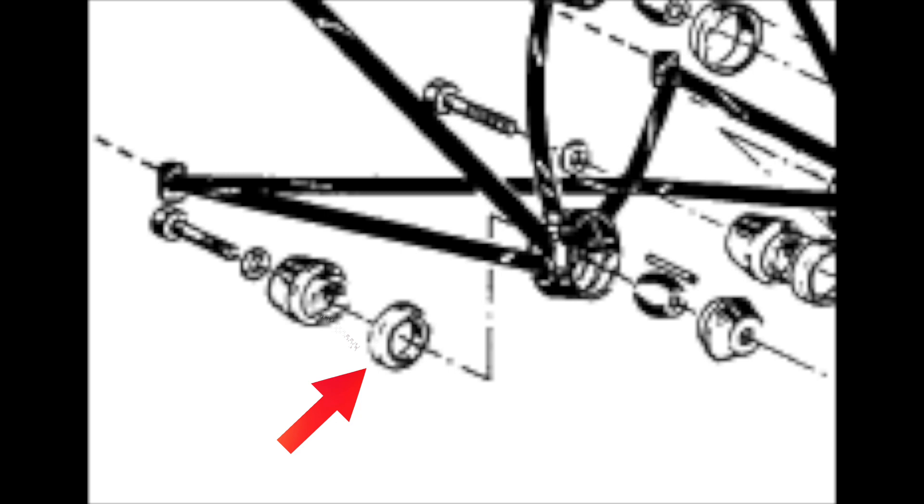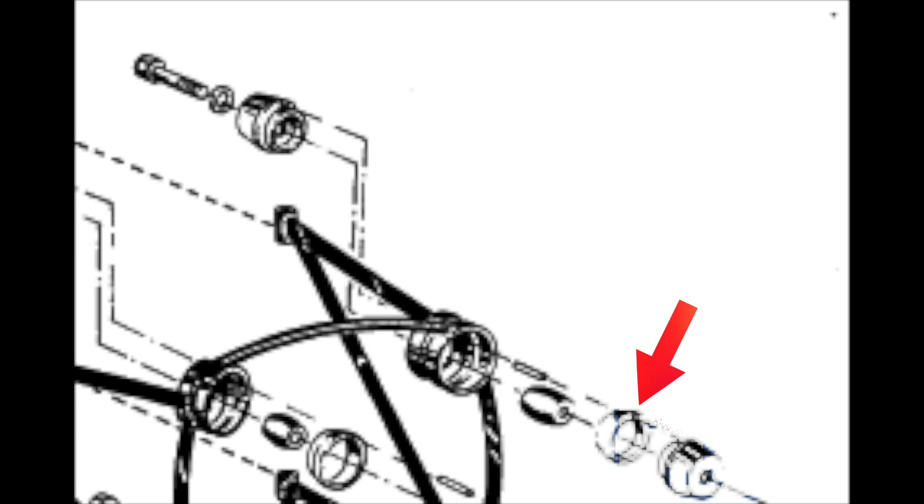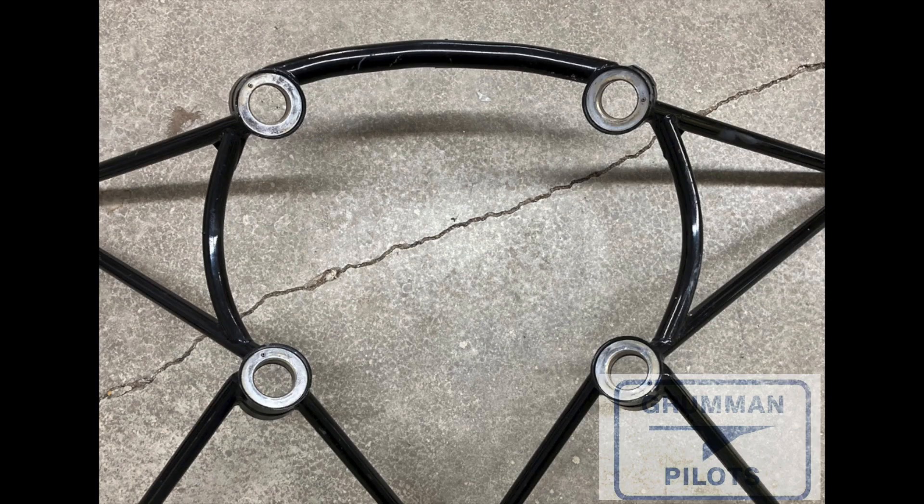If you get them in backwards, if you put them in like in the photo in the very beginning, the engine is going to sit too proud and it's not going to fit in the nose bowl. The spinner is not going to line up right. Make sure you have those in the proper orientation.